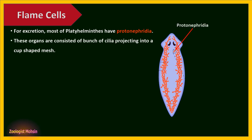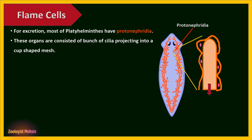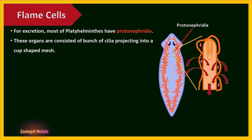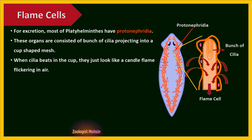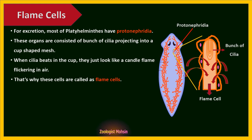Protonephridia consist of a bunch of cilia projecting into a cup-shaped mesh. The movement of cilia produces a flame-like appearance. When fluid enters the flame cell, it moves away from the cilia, which propel the fluid so regulatory functions can be performed. When the cilia beat in the cup, they look like a candle flame flickering in air — that's why these cells are called flame cells.